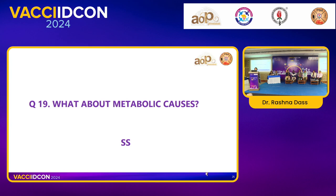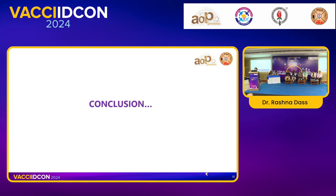Metabolic causes are important, especially in recurrent encephalopathy in early infancy when no other cause is found. Samples for metabolic workup must be taken before starting treatment and before stopping feeds. Send blood for ammonia, lactate, ABG, and tandem mass spectrometry on a dry blood spot. Treatment should be started simultaneously — non-specific treatment with multivitamins and a metabolic cocktail can be given while awaiting results.